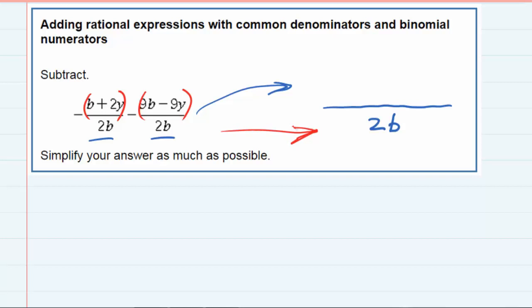Distributing the first one: minus 1 times b gives minus b, minus times positive 2y gives minus 2y, and doing the same thing here, minus times 9b gives minus 9b.